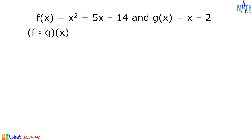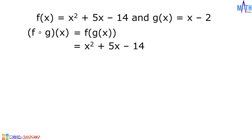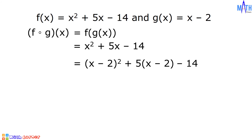Next is f composed with g of x. g of x is equal to x minus 2. We will substitute x minus 2 to x in f of x. Since f of x is equal to x squared plus 5x minus 14, x squared becomes the square of x minus 2, plus 5x becomes plus 5 times quantity x minus 2, minus 14.